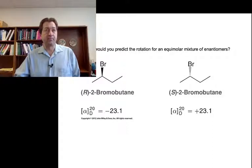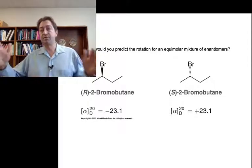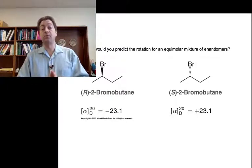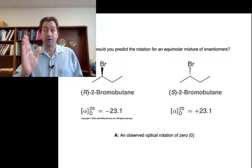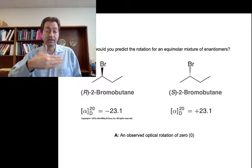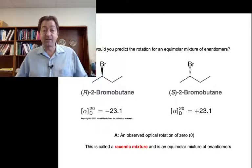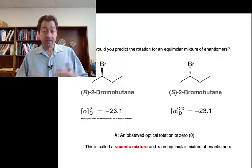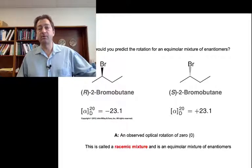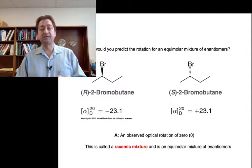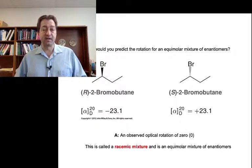What would you observe in the polarimeter if you had an equal molar mixture of both enantiomers? You've got one enantiomer rotating light to the left and the other rotating it an equal and opposite amount to the right. With exactly equal amounts of both enantiomers, you'd observe an optical rotation of zero — you wouldn't have to rotate the second polarizing filter at all. This is a special circumstance called a racemic mixture: an equal molar mixture of enantiomers. Note that achiral molecules don't rotate plane polarized light at all, so a racemic mixture is different from an achiral molecule — it's a chiral molecule, but an equimolar mixture.